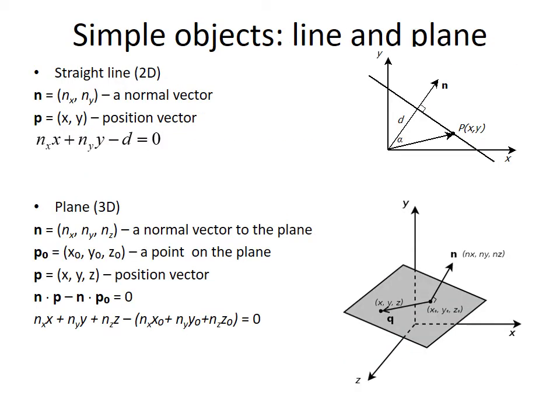Following by the same logic, we can define line and plane. If n equals (n_x, n_y) is a normal vector and p equals (x, y) is an evaluated point, we can construct an implicit function f(x, y) equal to n_x times x plus n_y times y minus d. This function equals 0 at points of a straight line in two-dimensional space.